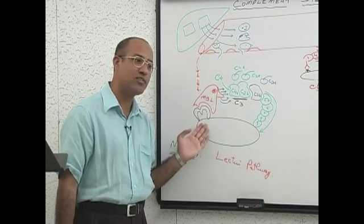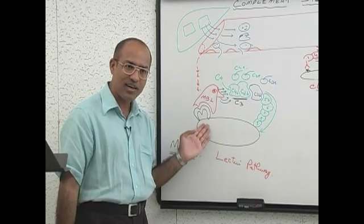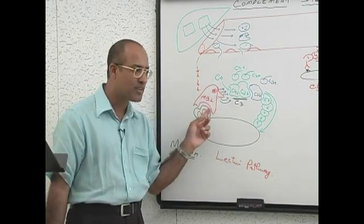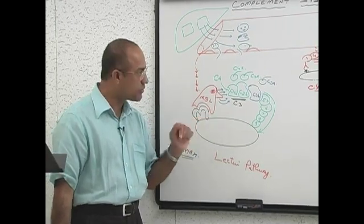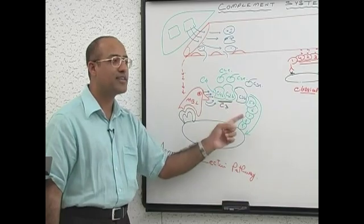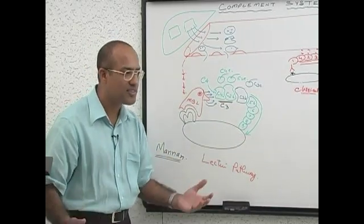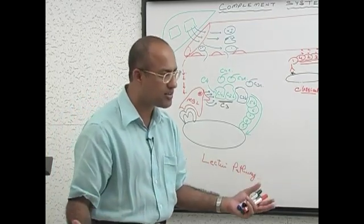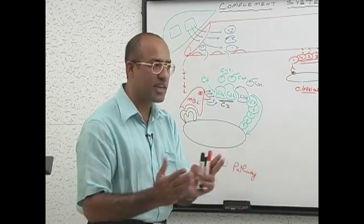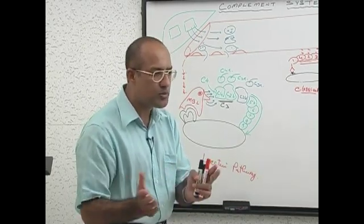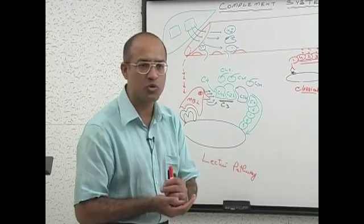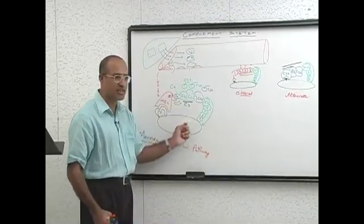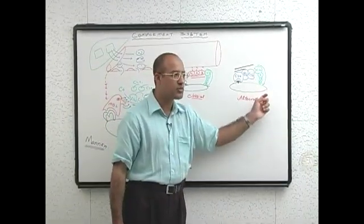Mannin is exposed on the surface of bacteria, and mannin-binding proteins are normally present in our blood. This pathway acts like the innate immune response — non-specifically activated against multiple organisms, present naturally in your body, and which does not boost up with repeated exposure. That is called innate immunity. So this is an example of innate immunity.